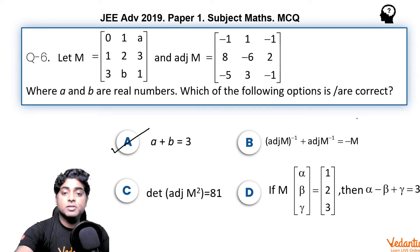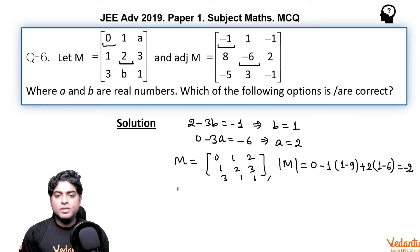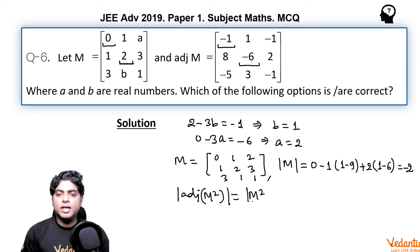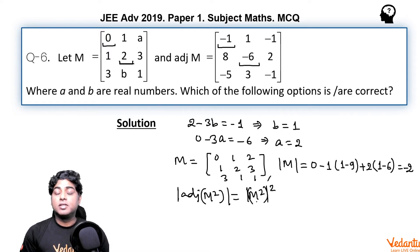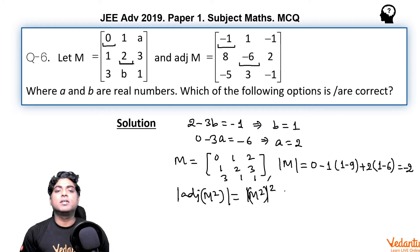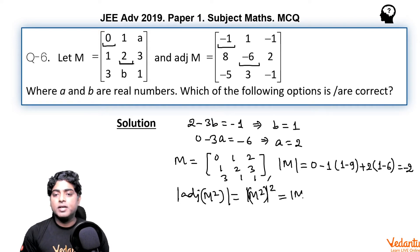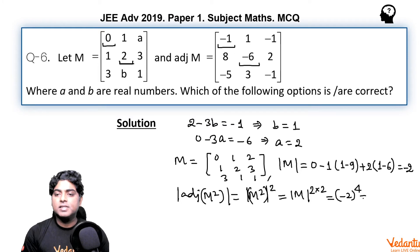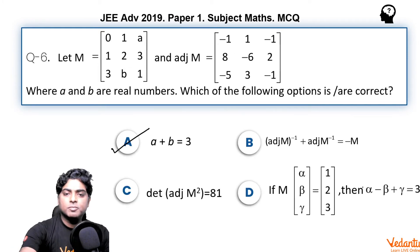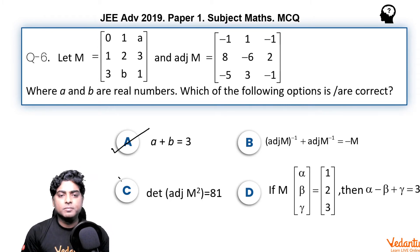Option C asks whether the determinant of adjoint of M² equals 81. We know that the determinant of the adjoint equals the square of the determinant when the order is 3×3. So the determinant of adjoint of M² equals (det(M²))², which is (det(M))⁴ = (−2)⁴ = 16. Since the option states 81, option C is incorrect.